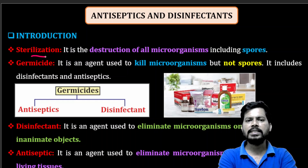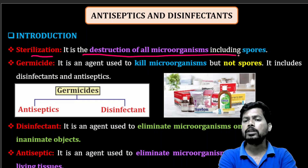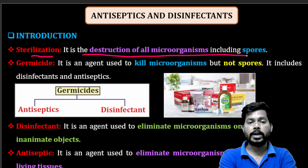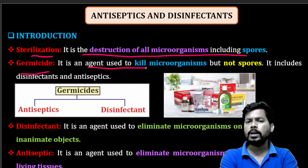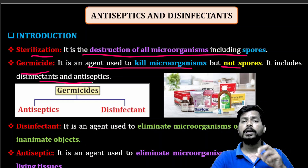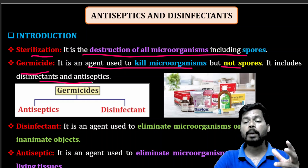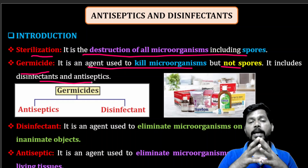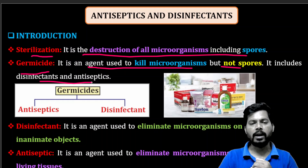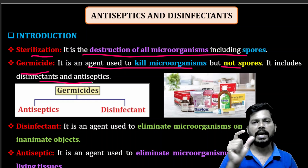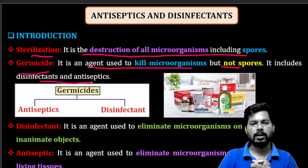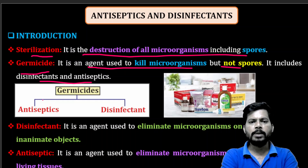First, sterilization — the destruction of all microorganisms including spores. Spores are not easily destroyed. A germicide is an agent used to kill microorganisms but not spores, including disinfectants as well as antiseptics. Spores are a type of organism not easily killed because their structure contains dipicolinic acid, a calcium complex that is resistant to heat.